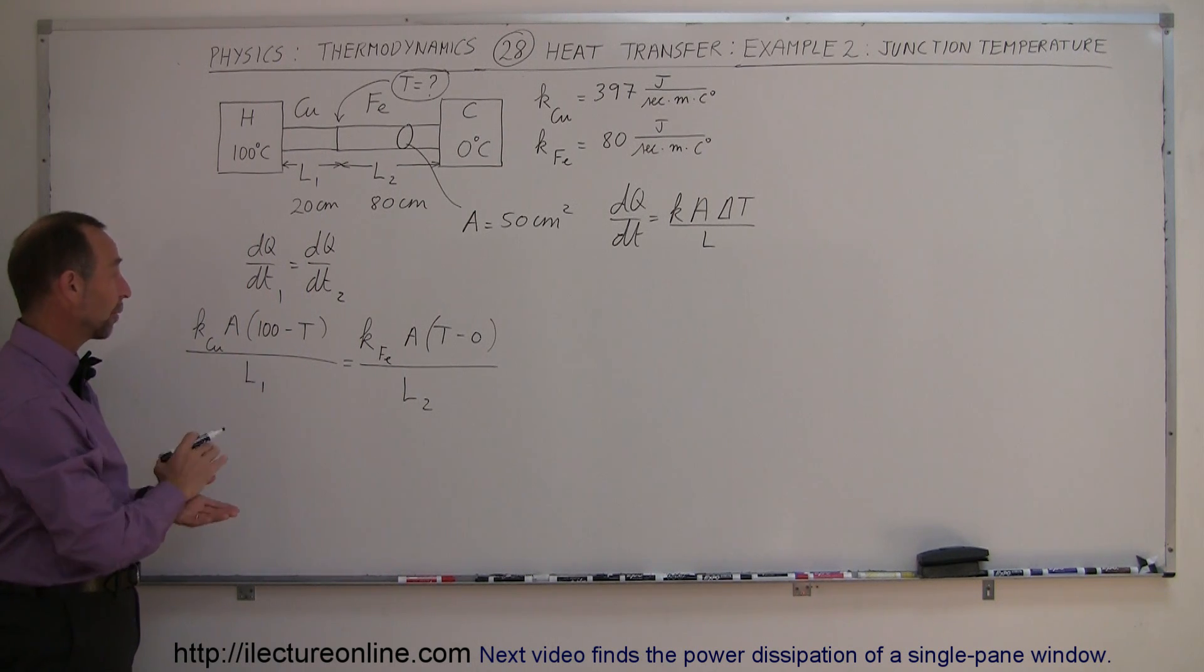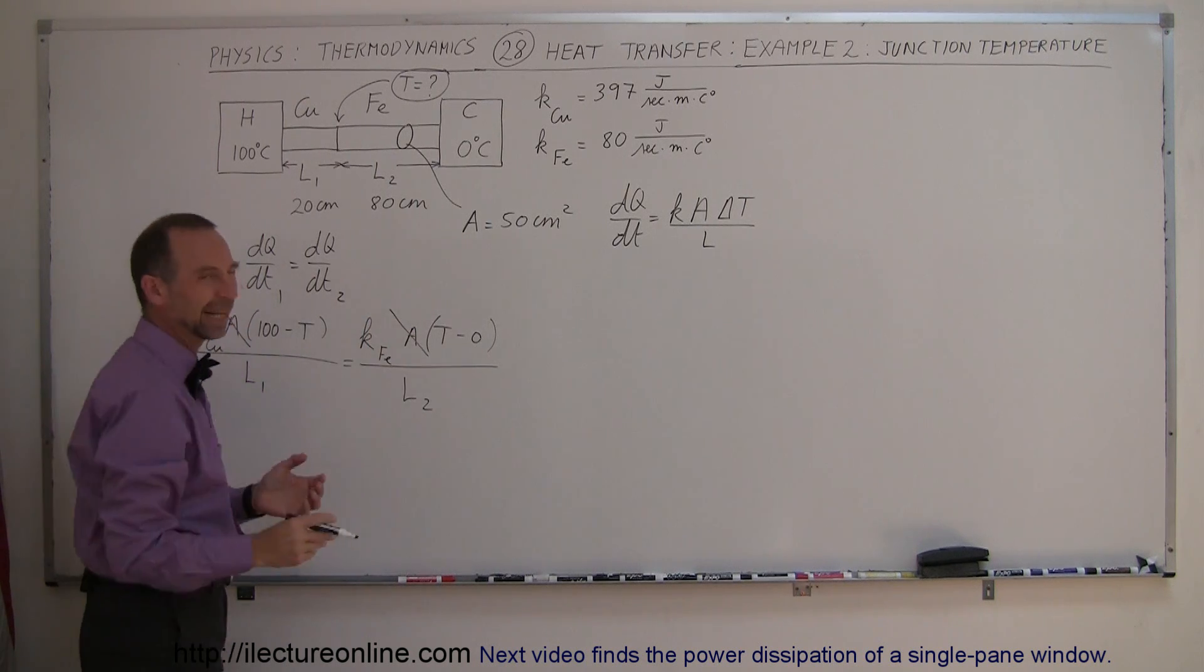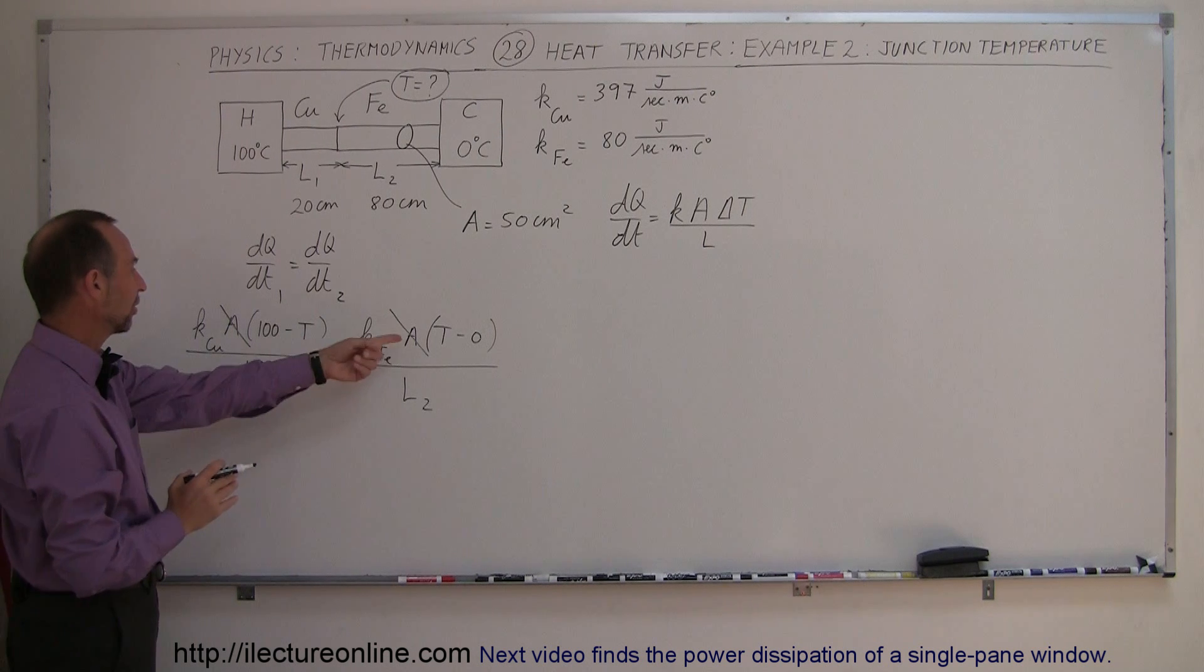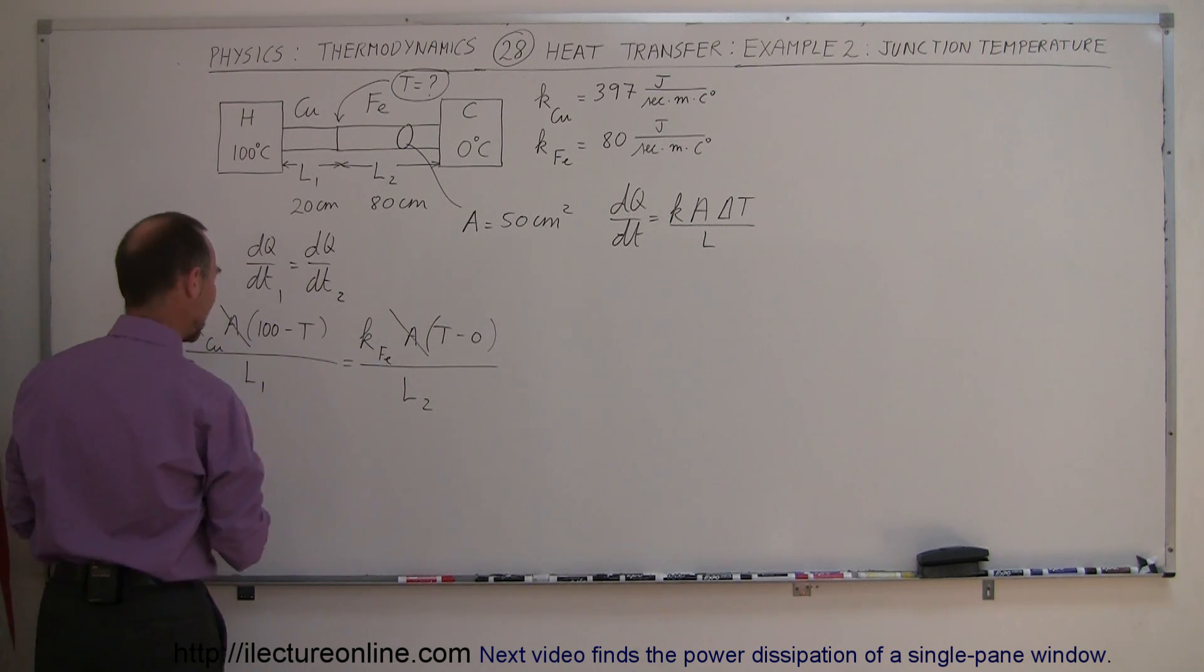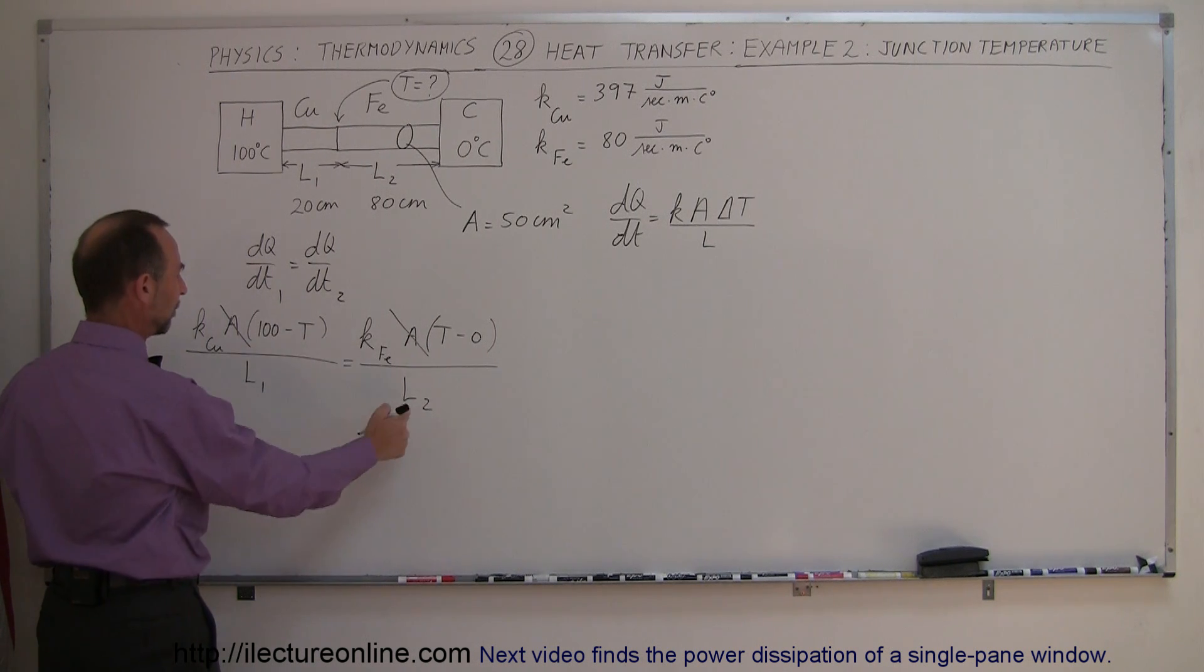Right away, you can see that on both sides of the equation, we have A. So we can go ahead and cancel that out. We didn't really need to know the cross-sectional area. Next, we'll simplify this a little bit. We're trying to find temperature. We do want to get rid of the parentheses. Maybe we want to cross-multiply the L. We'll put L2 over here and L1 over here.